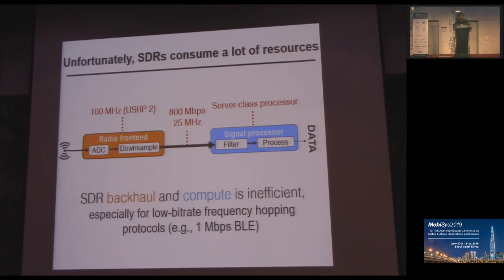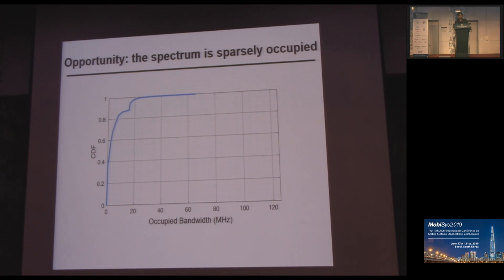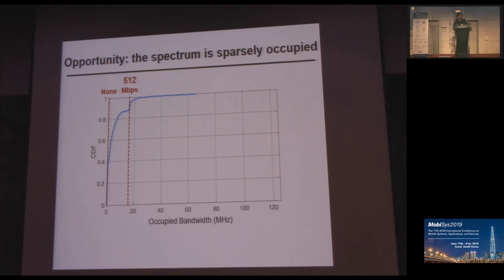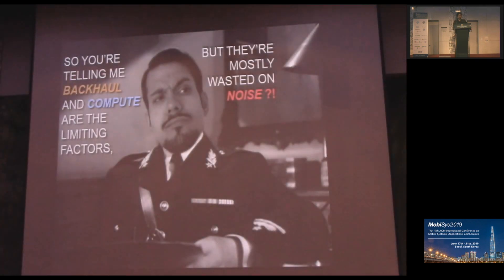So why is this happening? This is because software-defined radios capture the spectrum even when it is not occupied. A more important question is: how much spectrum should a software-defined radio backhaul? To get an estimate, we ran a quick experiment where we computed the occupied bandwidth in megahertz in the ISM band. We captured the whole 125 megahertz for 45 seconds and plotted the cumulative distribution function of the occupied bandwidth. As you can see, almost 40% of the time there is no signal in the spectrum, and in this case we do not need to send any data. Almost 85% of the time, only 18 megahertz out of 125 megahertz is occupied, and in this case we need to send no more than 512 megabits per second. But in existing SDRs, we constantly have to send 4 gigabits per second of data. So backhaul and compute are the limiting factors in SDRs and they are mostly wasted on sending noise samples.